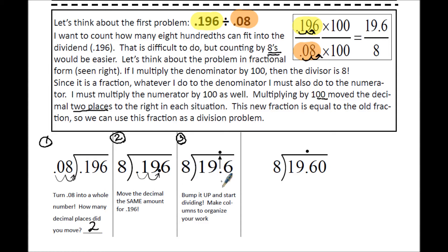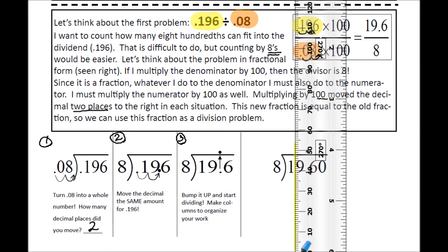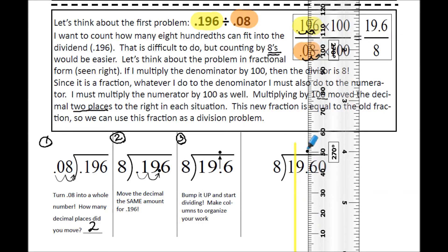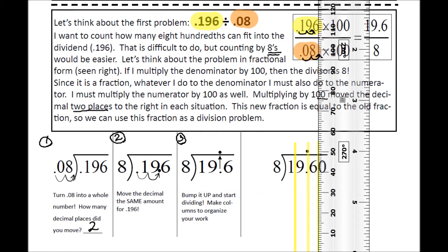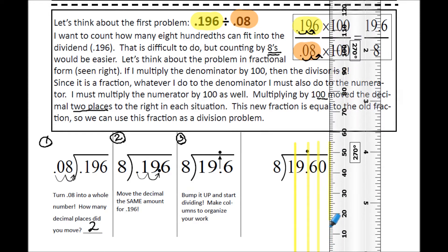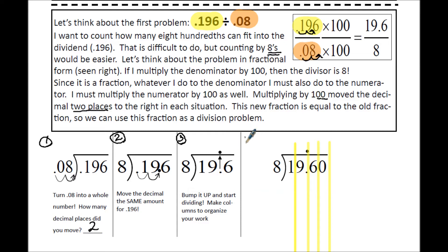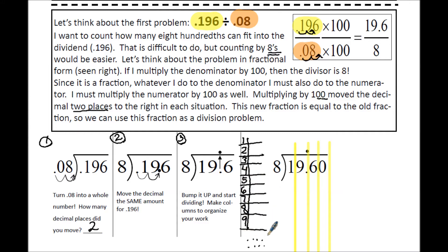The third step is to bring that decimal place up and to start dividing. You need to make sure that you keep everything in line with your columns to organize your work, because if you get out of line, you're going to get the wrong answer. You can use your highlighter and a ruler to make some columns for your division problem. And if you're having trouble with your 8 times tables, list it out 1 through 9.